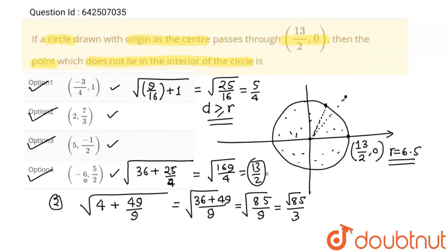So the distance of the point given in option 4 from the origin is the same as the radius. It means that the point (-6, 5/2), which lies in the second quadrant, lies on the circle, not inside the circle. Therefore, option 4 is correct. Thank you.